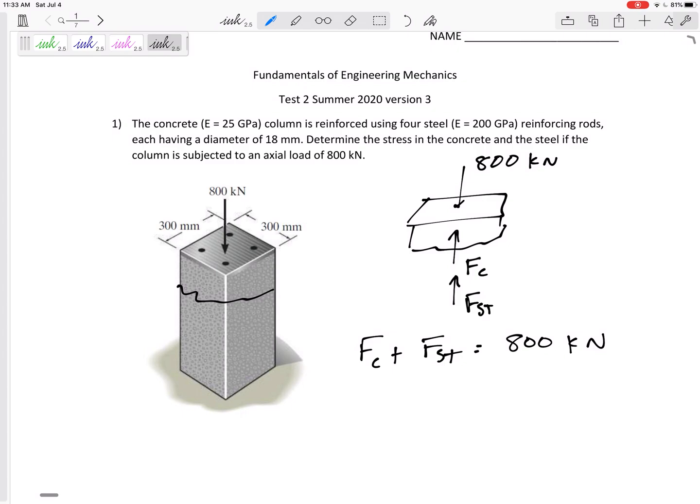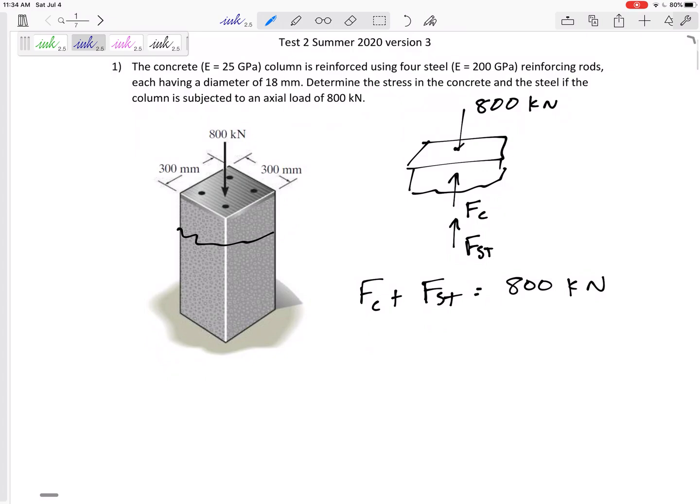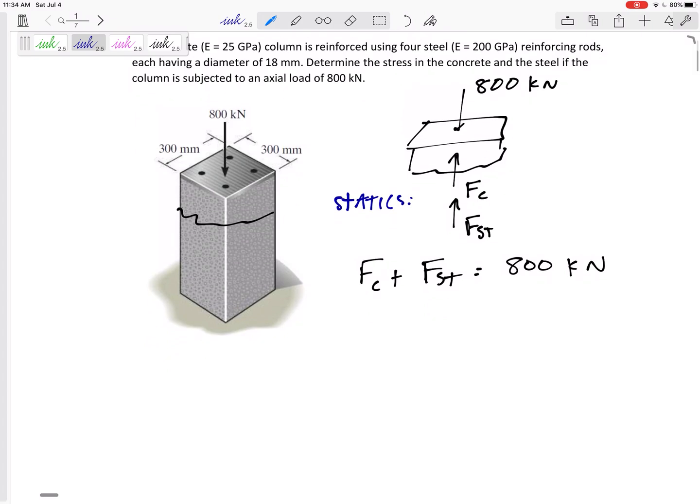If you choose to do them as four separate steel rods, that's fine. I'm grouping them together. Let's all stay consistent. In the end we will get the same answer. The stress in the steel rods will get the same answer no matter how we do them. But now I'm grouping them together as the steel. I've got the force in the concrete plus force in the steel adds up to 800. But from that equation I don't know. Is it 400 and 400? Is it 100 and 700? I don't know. We need one more equation and so that's our compatibility.